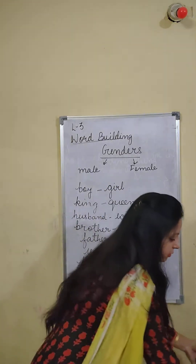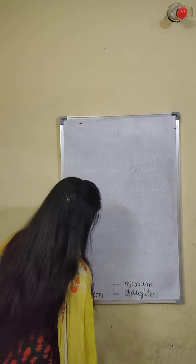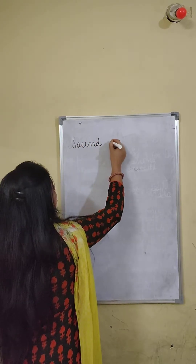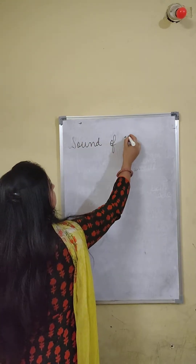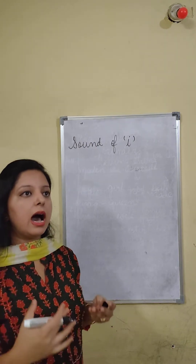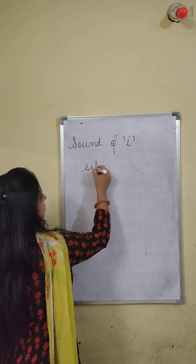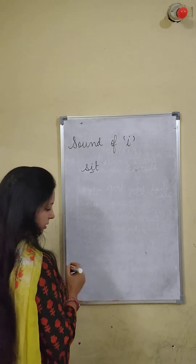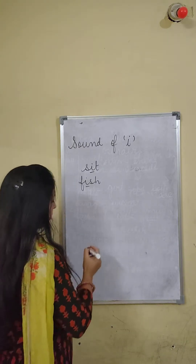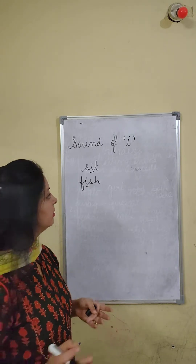Now the next exercise — we will be jumping to the sound of I. Now let's check what does I sound like. Listen to the words: sit — sit, sit. Next word is fish. Here I is sounding like E. Fish, sit.